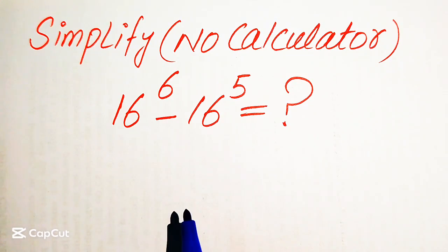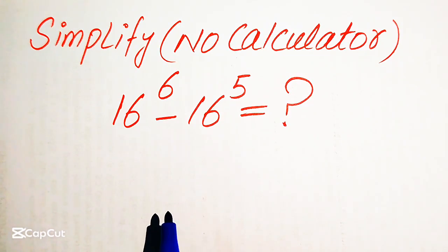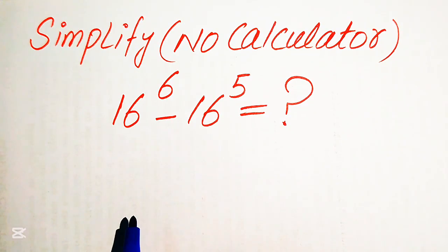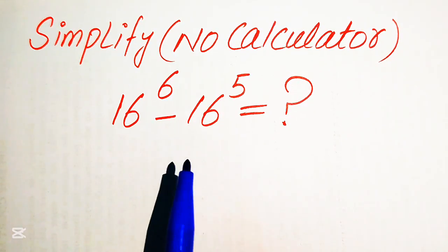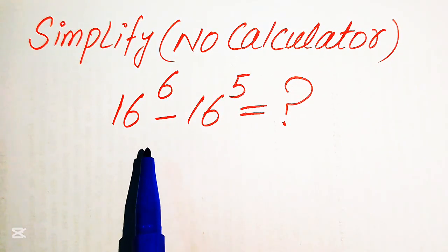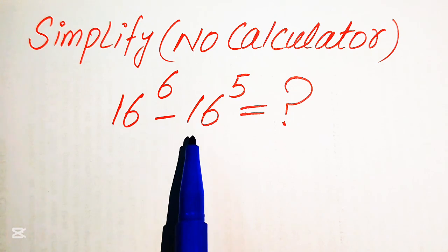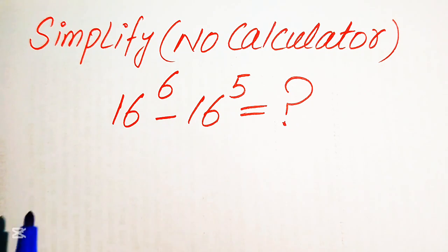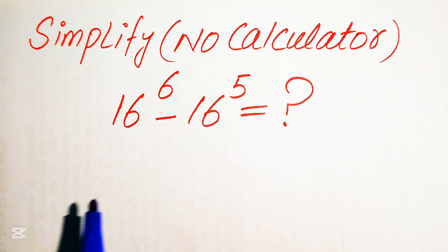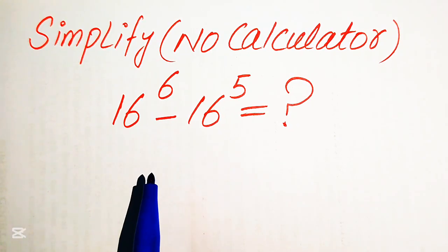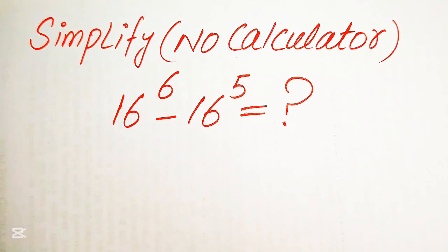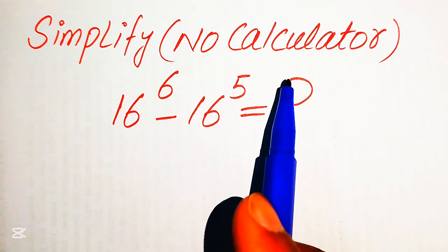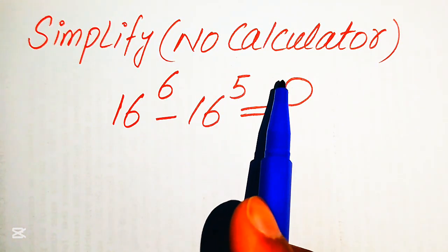Hello everyone. How to simplify this nice algebraic expression — if we have 16 to the power of 6 minus 16 to the power of 5, we write this algebraic expression into the lowest form without using the calculator.